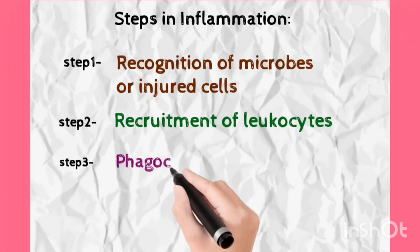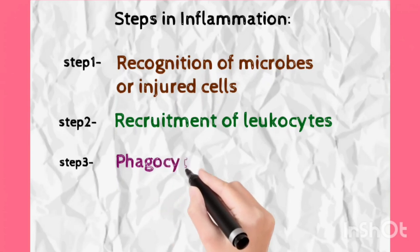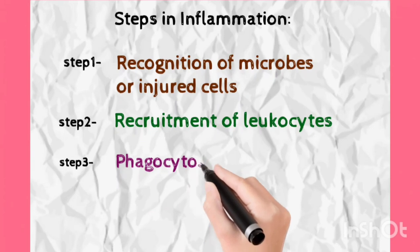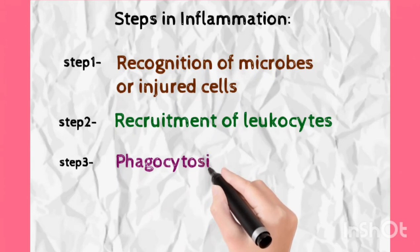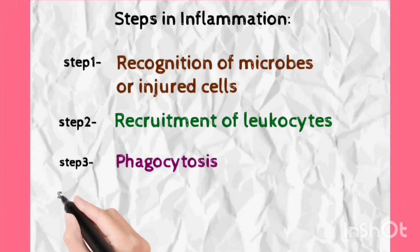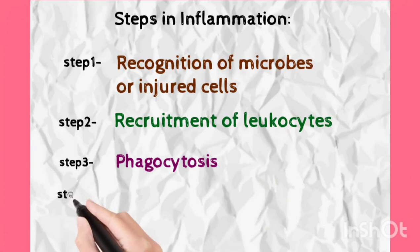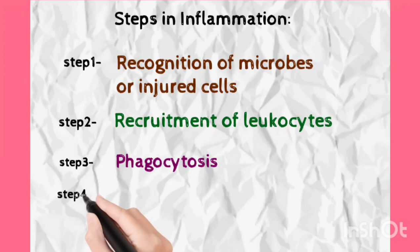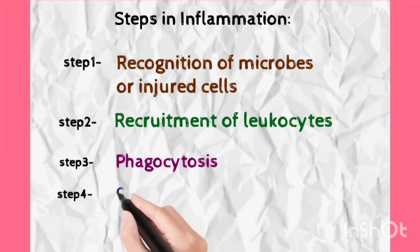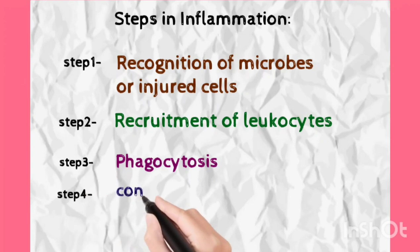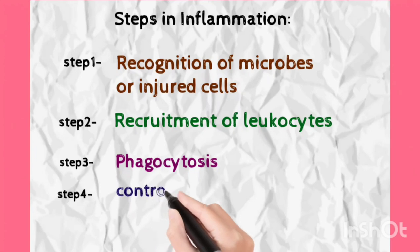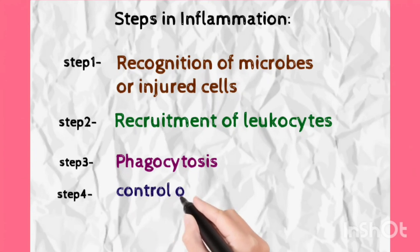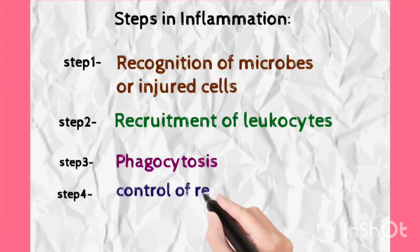The fourth step is control of the inflammatory process. Usually, our body controls the inflammatory process after removal of the offending agent. But sometimes, in certain reactions, our body cannot control this inflammatory process — and that unnecessary inflammation leads to tissue damage.